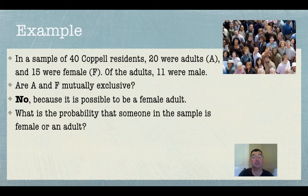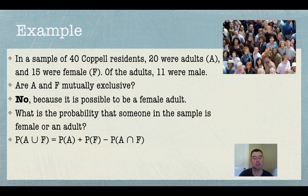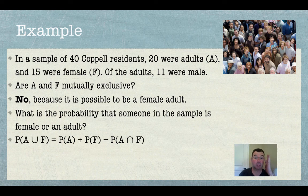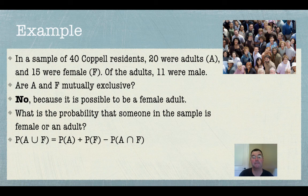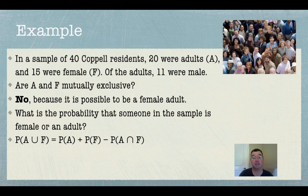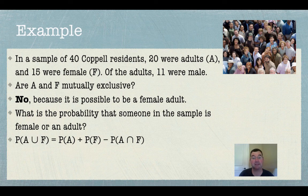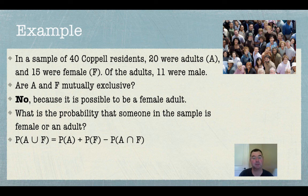There is overlap between the adults and the females in those 40 residents. So what's the probability that someone in the sample is a female or an adult? Well, the probability of being an adult or a female is the probability of being an adult plus the probability of being a female minus the probability of being both an adult and a female. And again, the reason why I subtract those adult females out is because I've counted them twice. I've counted them as adults in the probability of A. I've counted them as females in the probability of F. So I can't count them twice, so I'm going to subtract them out once. That way, I only count them once.